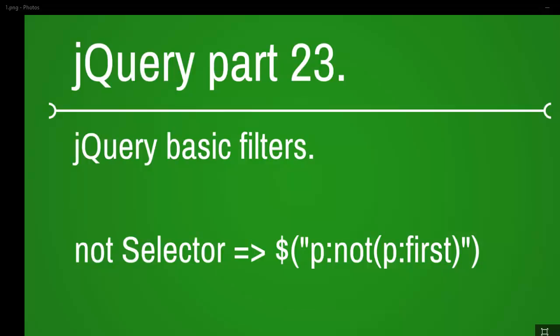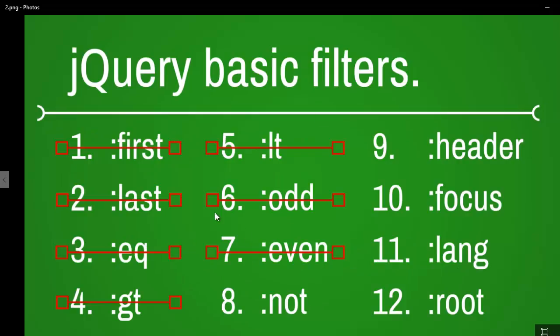Welcome to the jQuery video series. This is part 23 and today we are going to look at the :not filter selector.